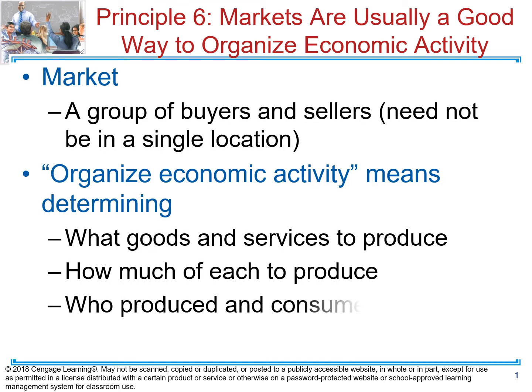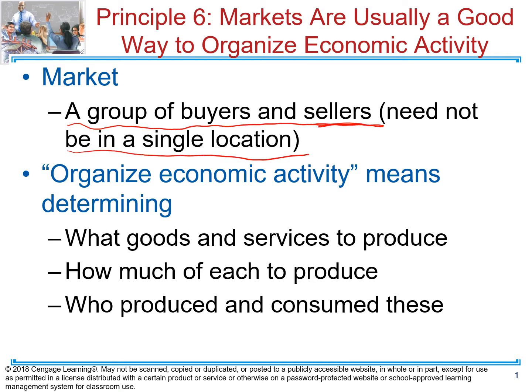The next principle we're going to talk about is that markets are usually a good way to organize economic activity. When we're talking about a market, we're talking about the group of buyers and sellers that have a particular goal in common. Sellers usually want to produce a product and sell it at a certain price, and they want to make money. Buyers are all the time looking for a certain product that is going to bring them some kind of value, and buyers always want to purchase a product at a lower price.